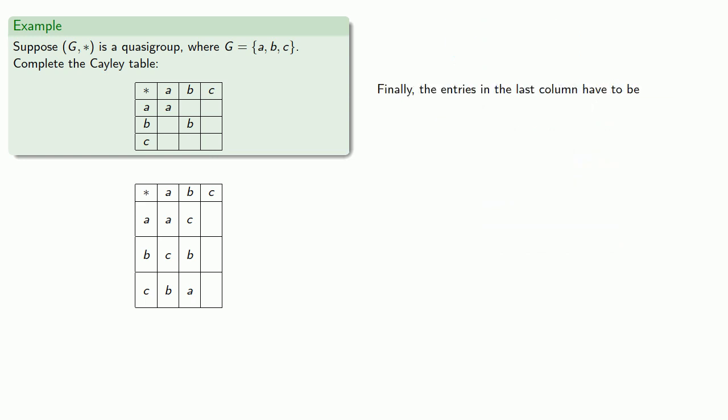And finally let's take a look at the entries in the last column. In the first row we already have A and C, that means this last entry has to be B. Second row we already have C and B, so the last entry has to be A. And then third row we already have a B and an A, which means the last entry has to be C.